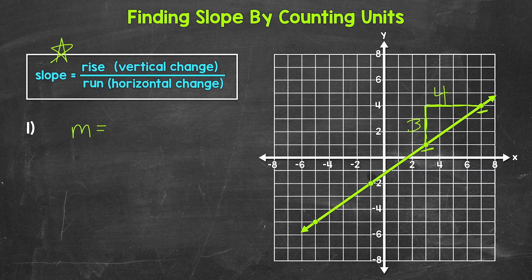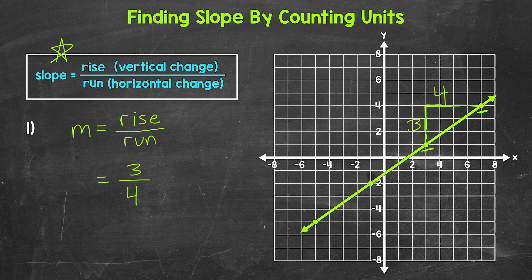So slope equals — and I'm using M for slope here; we can use M to represent slope — rise over run. Now we can plug in our rise and run. The rise is three and the run is four, and this is our slope: three over four, three fourths. The slope tells us that this line goes up three units for every four units it goes to the right.